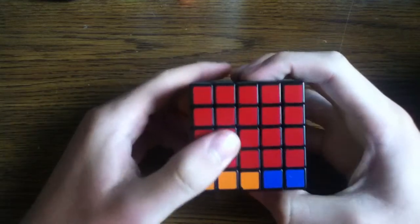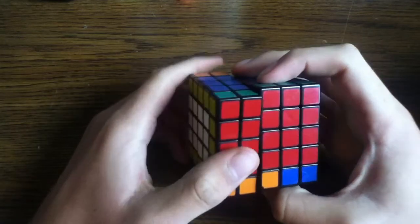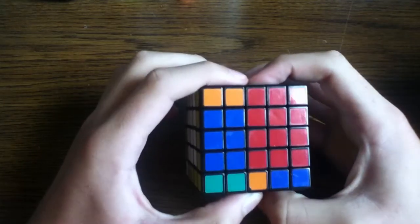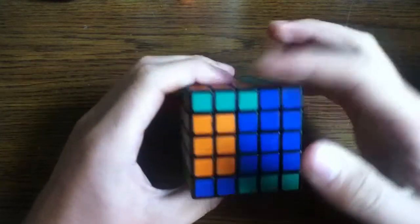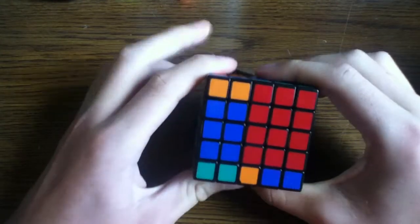Then take the left two sides, rotate them 90 degrees clockwise, then you take the back of the cube, rotate it 180 degrees.